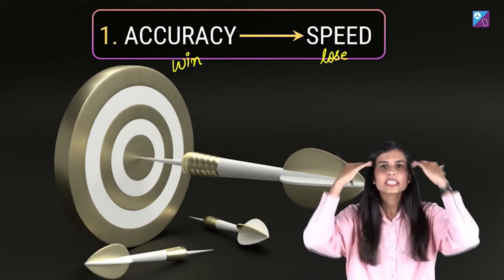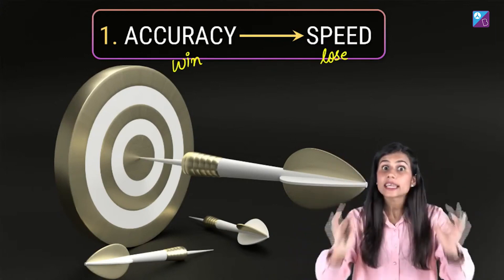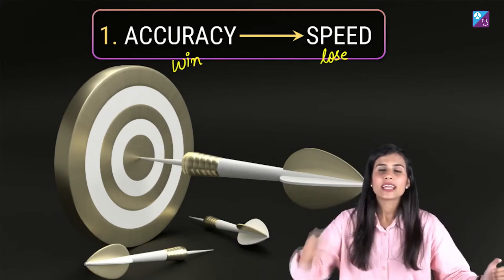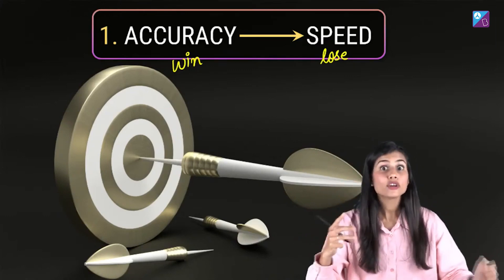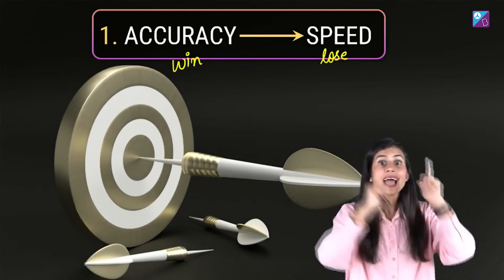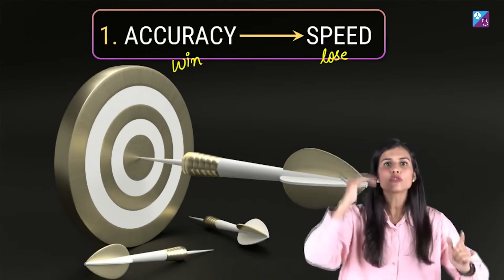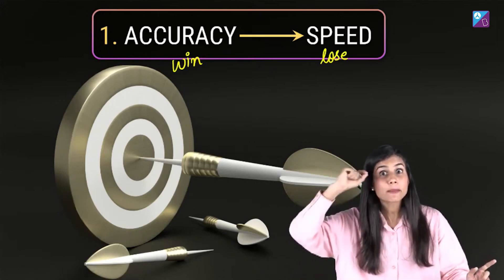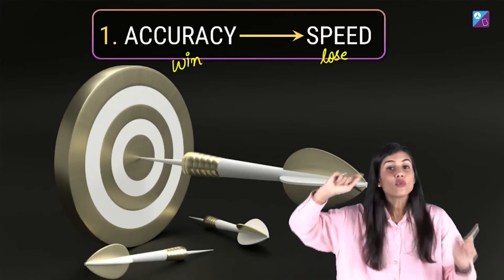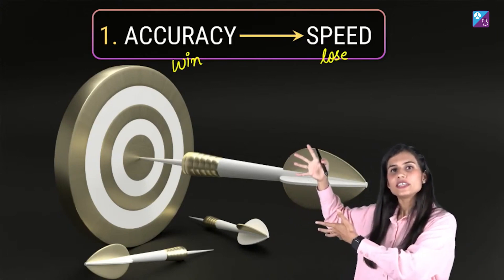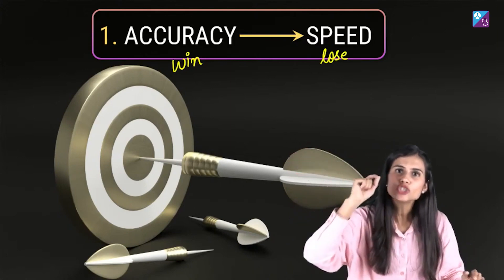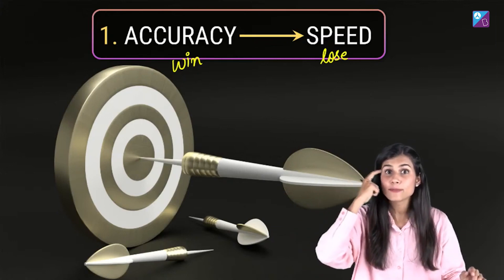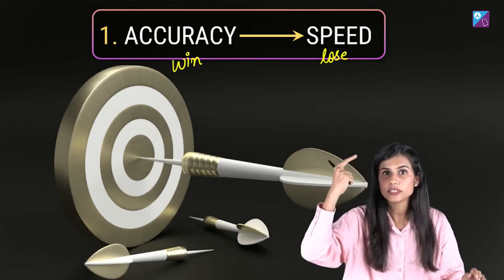Pore patience ke saath, tasalli ke saath, pore focus ke saath — aram se un teeno ko solve karo. Har ek step likho, har cheez recall karke aram se apply karo aur sahi answer tak pahuncho. You will feel a boost in confidence when you get those three questions correct — because you targeted three and got three correct. That's three out of three, or twelve out of twelve — a perfect score. That small win boosts your confidence.